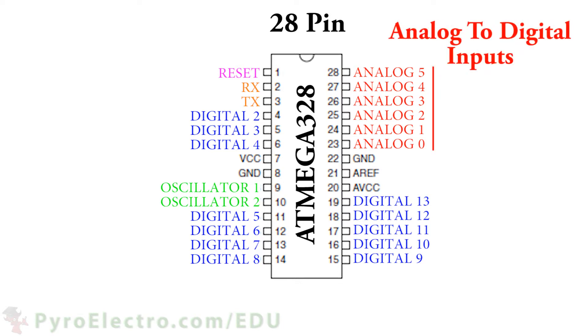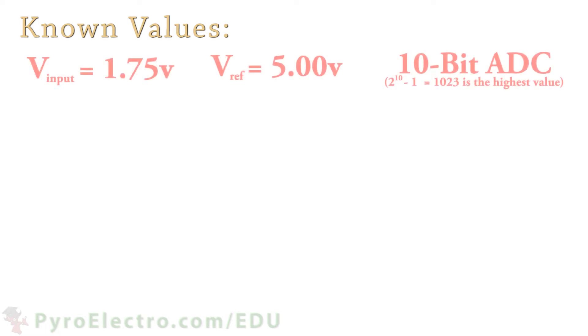These modules use a power and ground reference to create an integer value that represents the input voltage. For example, pretend a voltage of plus 1.75 volts was input into analog input 0. The analog input voltage is plus 1.75 volts, our microcontroller's power supply uses plus 5 volts, and the analog to digital converter produces a 10-bit binary value, which means the maximum conversion value would be 1023.